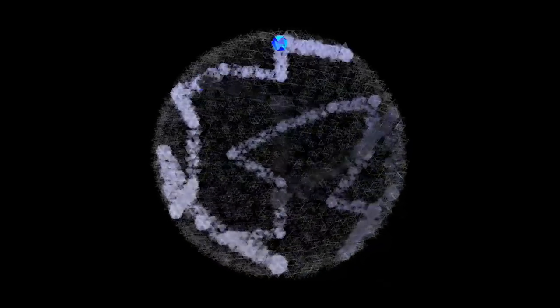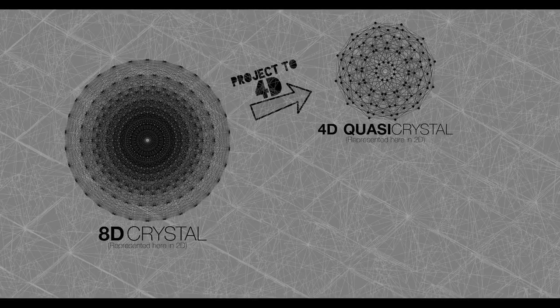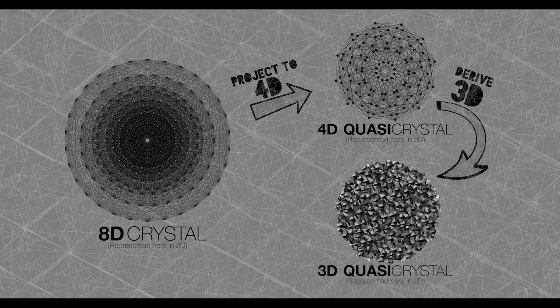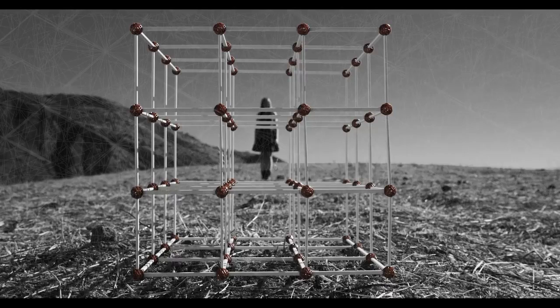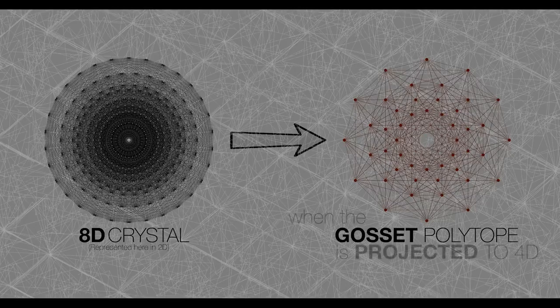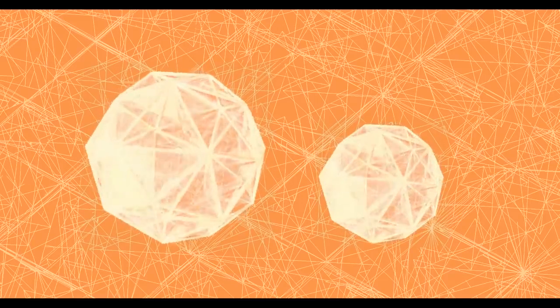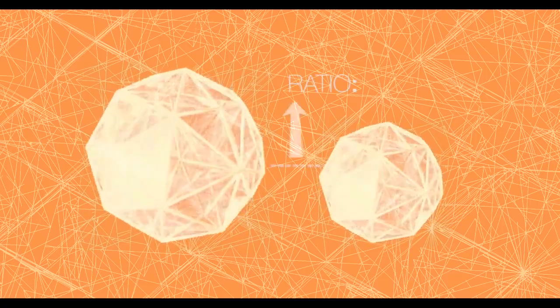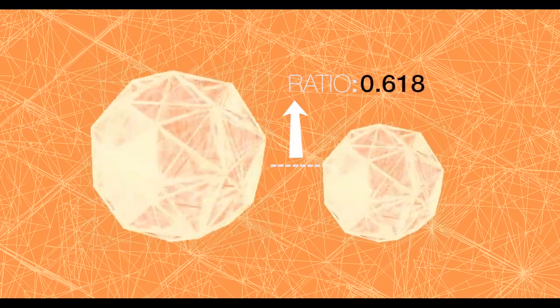To generate that 3D quasicrystal — the substructure of the pixelated fabric of reality — we project this 8D crystal to 4D, and then convert that to 3D. Just like the basic cell shape of the 3D cubic lattice is the cube, the cell shape of the E8 lattice is an 8D shape with 240 vertices called the Gossett polytope. When the Gossett polytope is projected to 4D, it becomes two identical shapes of different sizes. The ratio of their sizes is a unique number, 0.618, also known as the golden ratio.